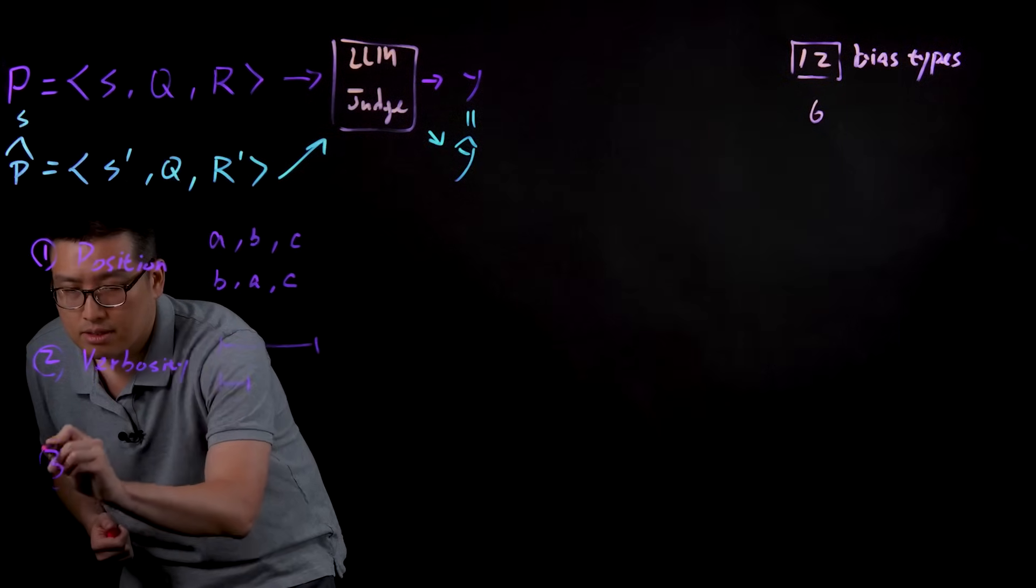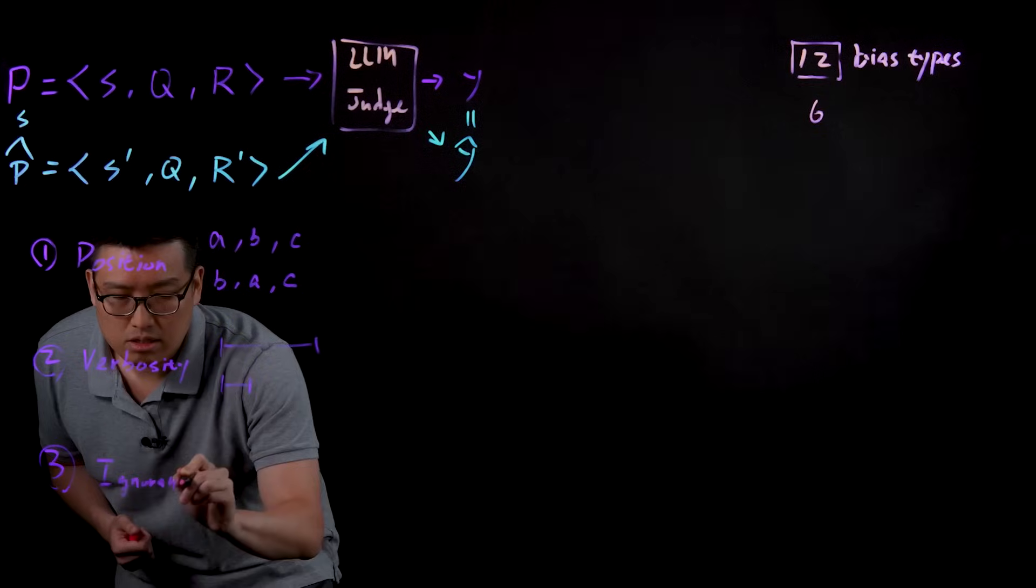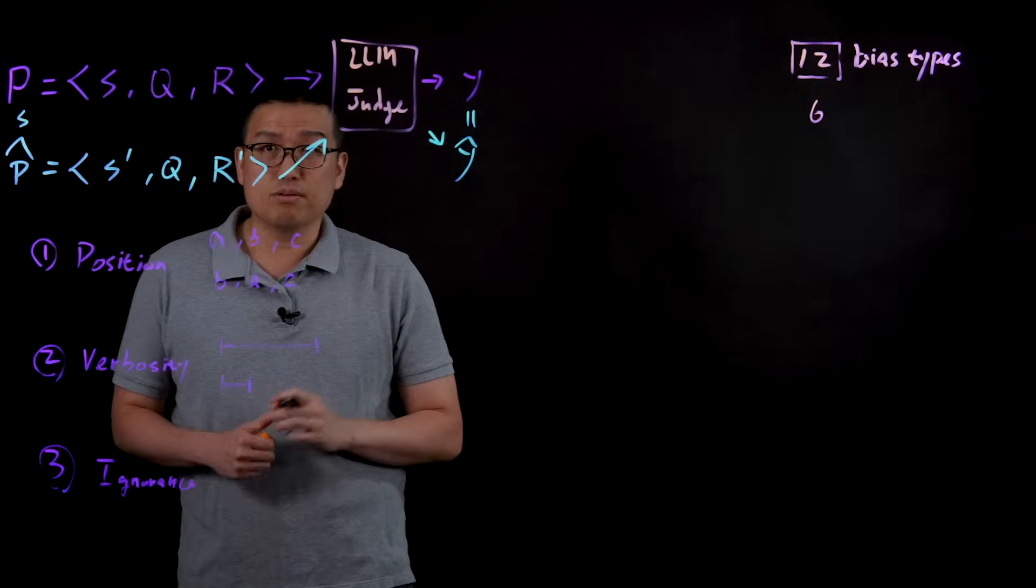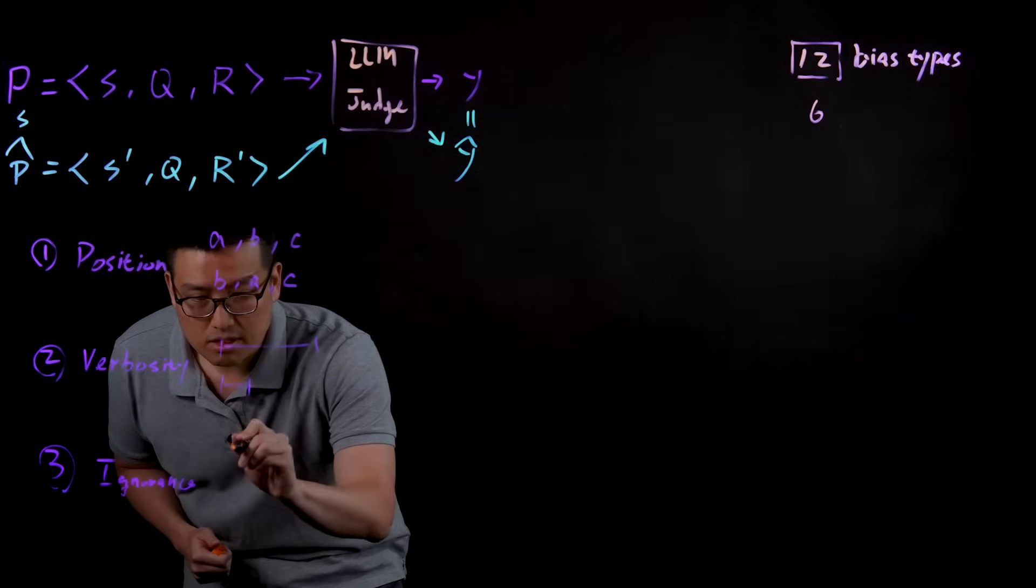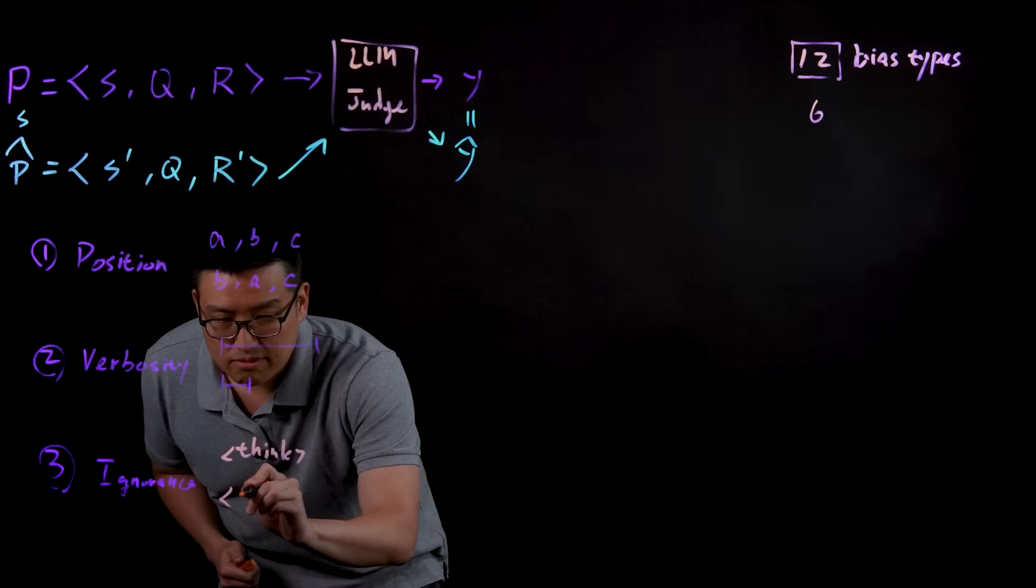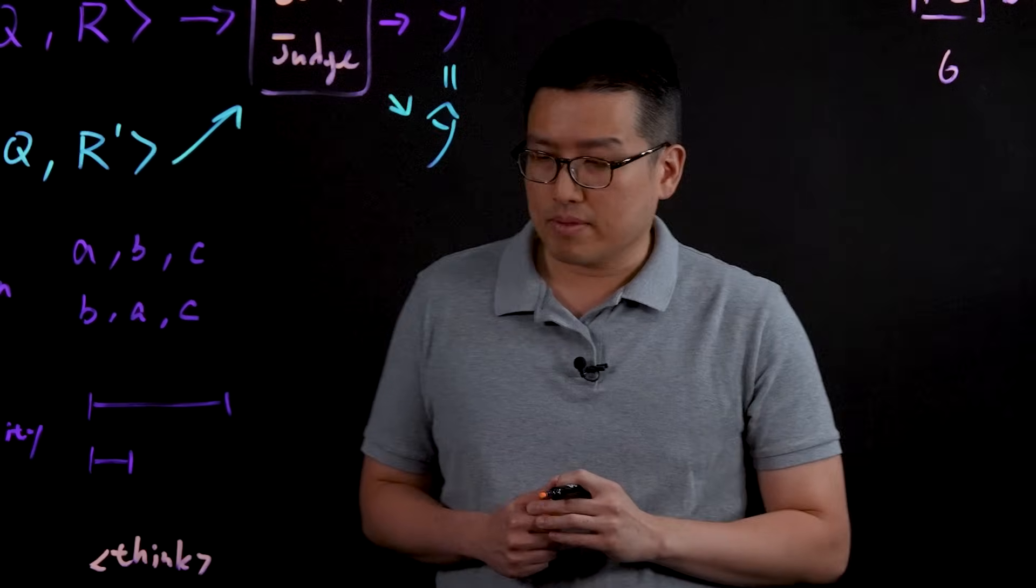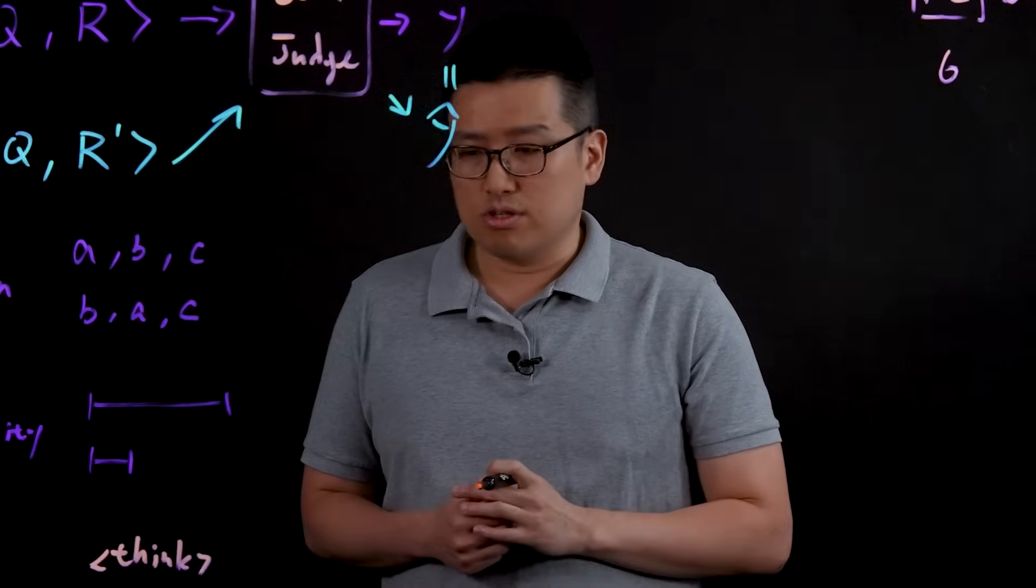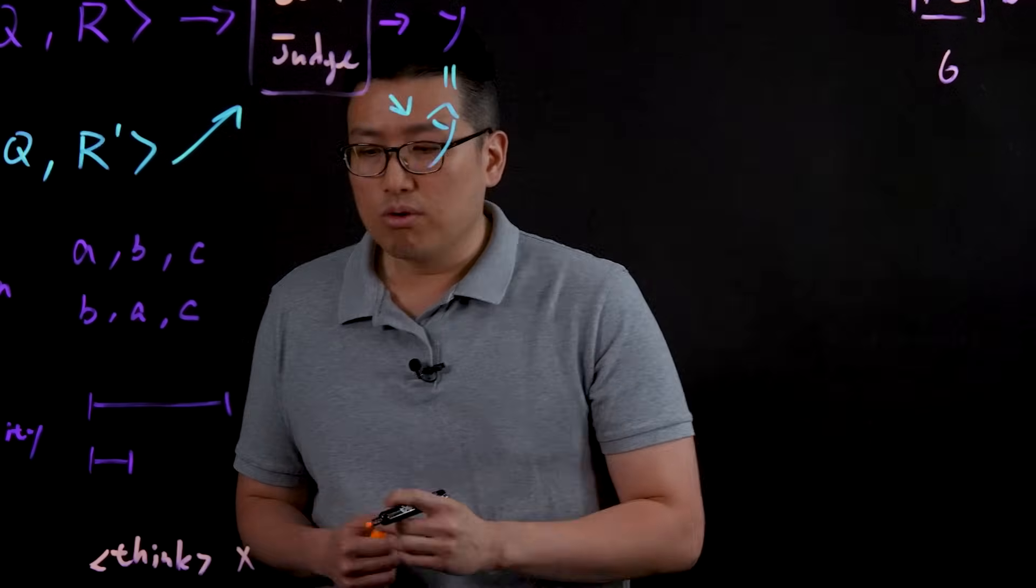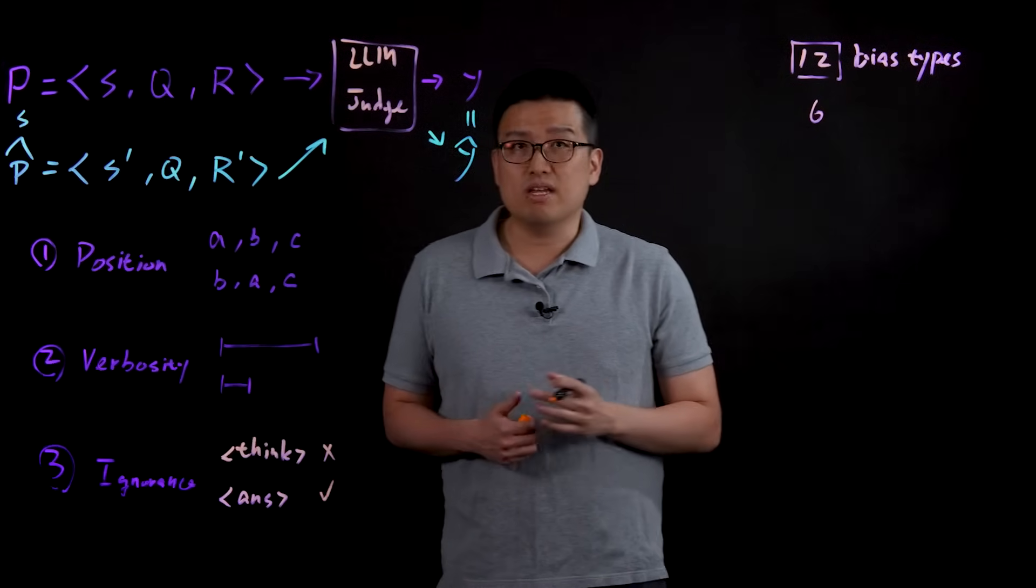The third one is what we call ignorance. In this case, we test some language models that will generate something called the thinking trace, so it will provide some internal thinking process before giving a final answer. So a very interesting finding that we had was that many of the judges will actually ignore the correctness of the thinking part and they will only focus on the correctness of the answer, which means the judge functions have not been made very comprehensive.